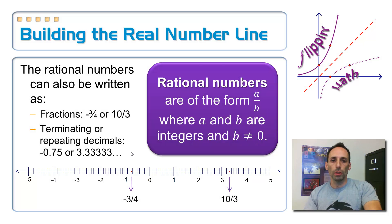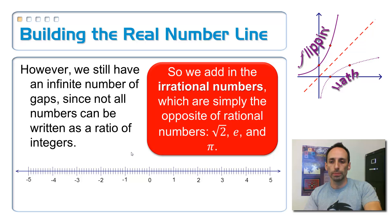So again, do we have all the numbers? No, we sure don't. So we fill in all the rest of the blanks, which are called irrational numbers. And since it has a little prefix, ir, that means the opposite of, the opposite of rational numbers.